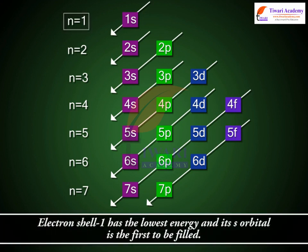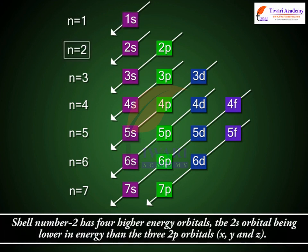Electron shell number 1 has the lowest energy and its s orbital is the first to be filled. Shell number 2 has four higher energy orbitals, the 2s orbital being lower in energy than the three 2p orbitals, x, y, and z.